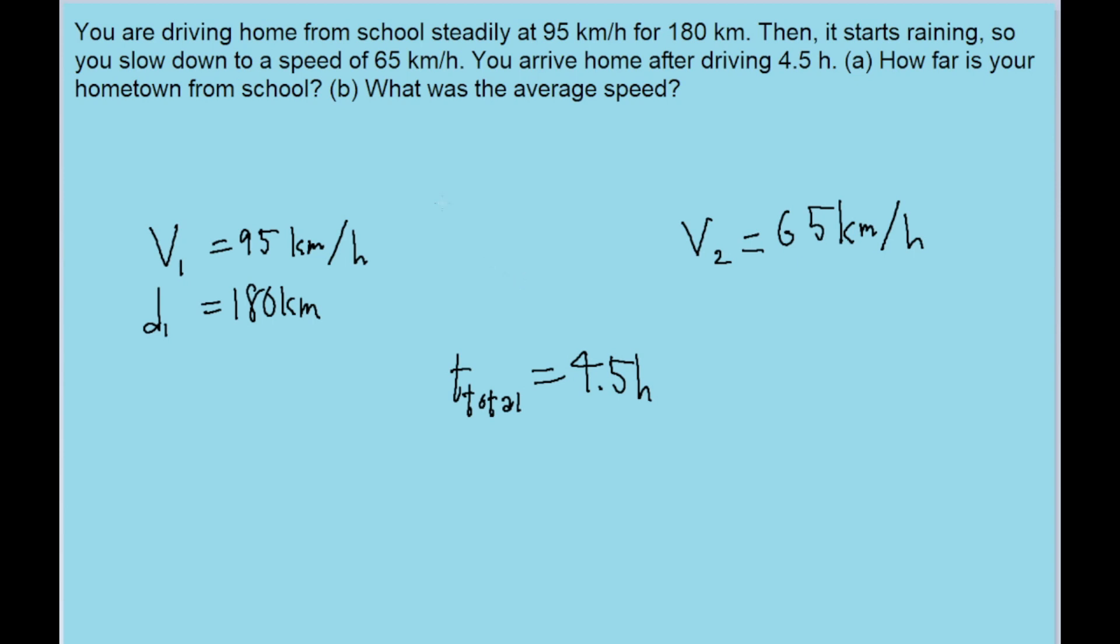Now part a asks us to figure out the total distance, so to figure out the total distance let's first go over the equations we have. We know speed is equal to distance over time, which algebraically tells us that time is equal to distance over speed and that distance is equal to speed times time.